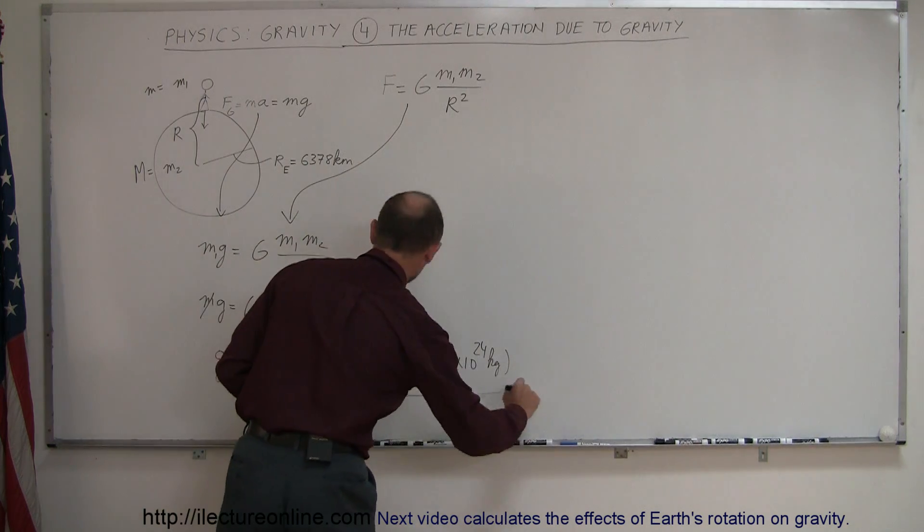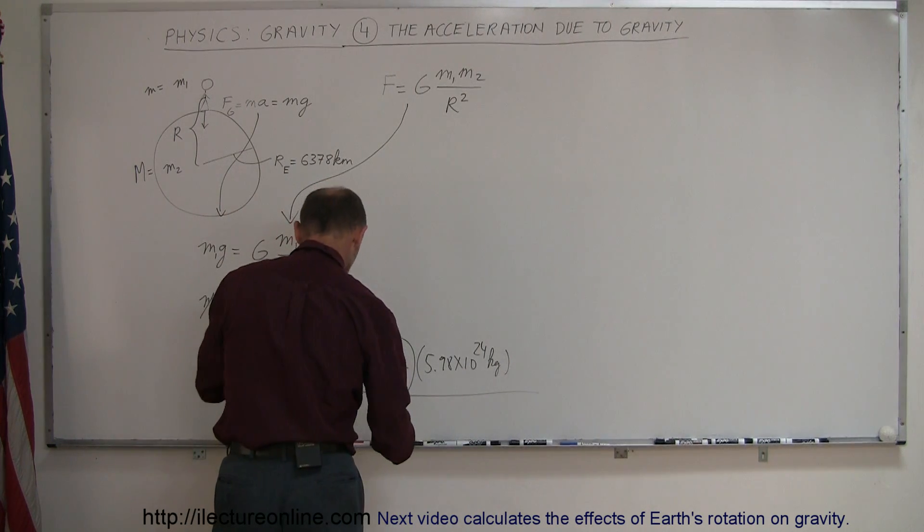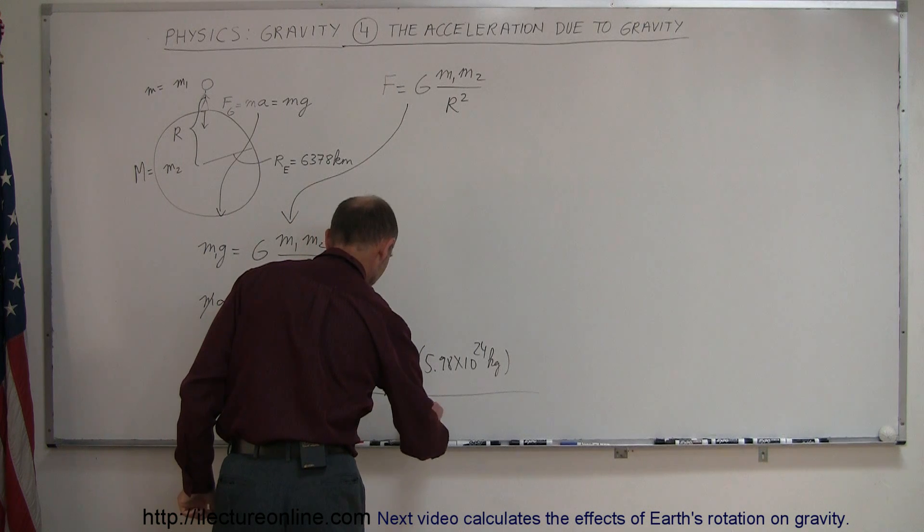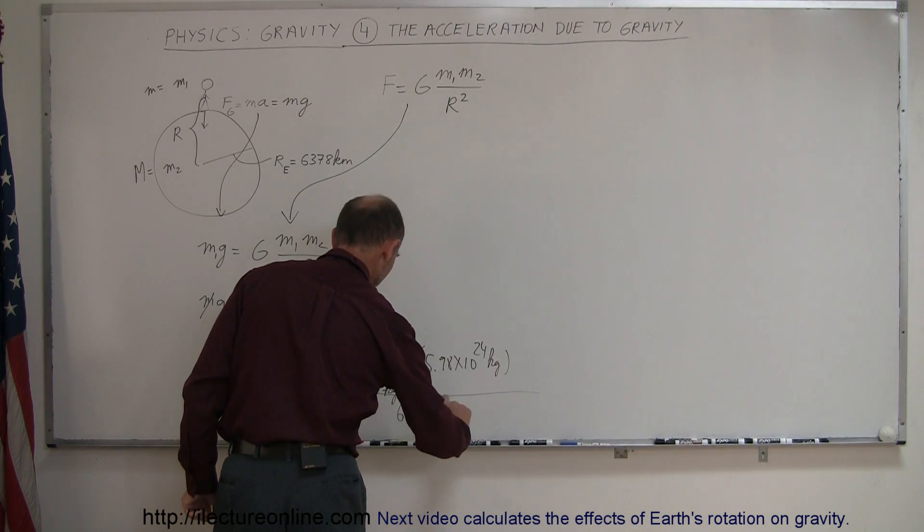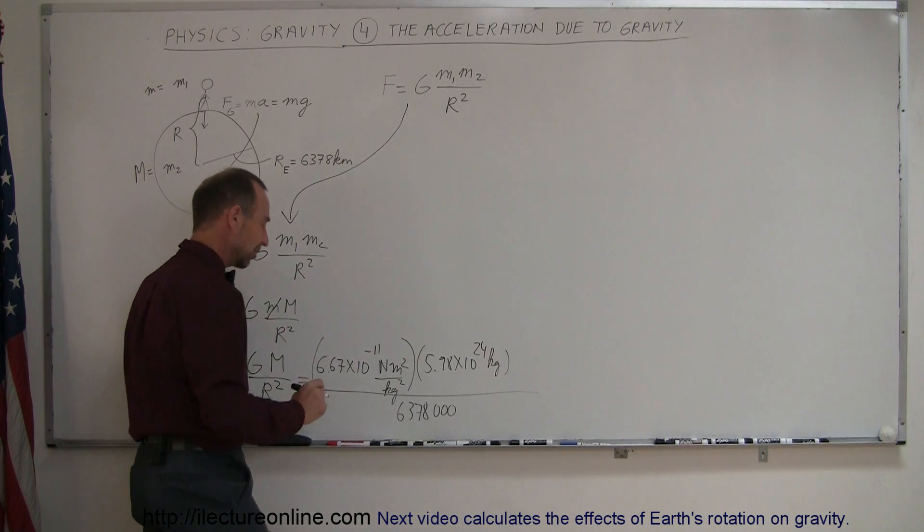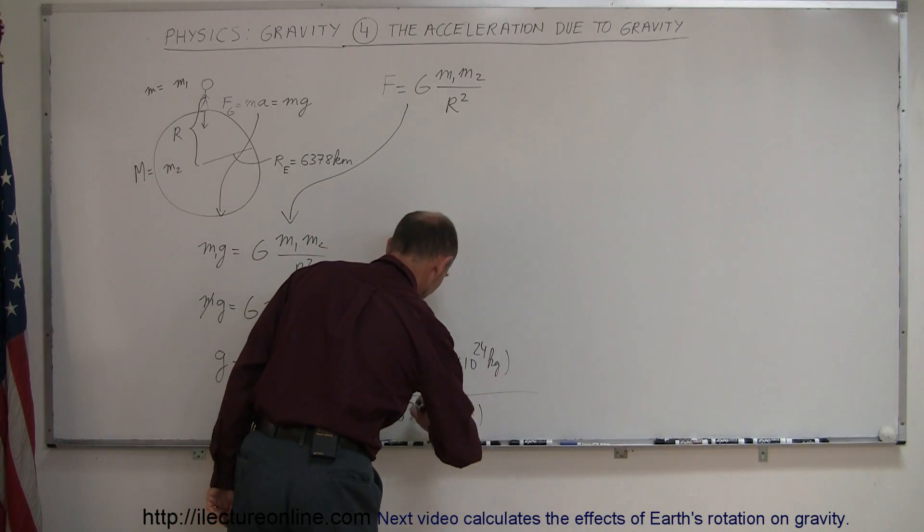divided by the distance between the person and the center of the earth, which is 6,378 kilometers, turned into meters, so it would be 6,378,000 meters, and we square that.